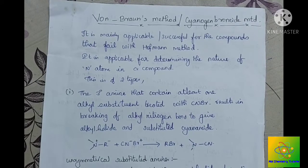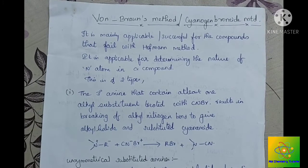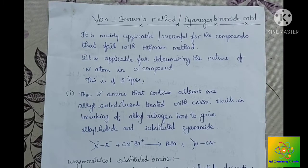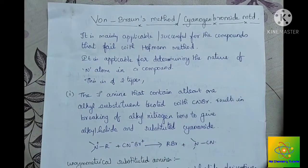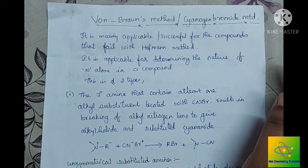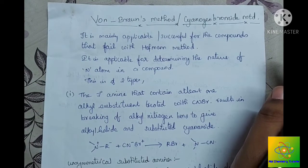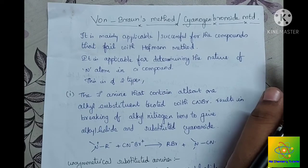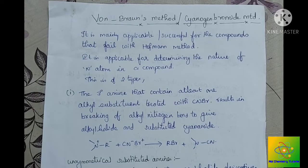In this video we will talk about the Von Braun method, or Cyanogen Bromide method. The Von Braun method is mainly used for the characterization of tertiary amines. There are two cases where this method is applicable: the first case is acyclic amines, and the other is cyclic amines. The Cyanogen Bromide method is used to characterize tertiary amines.